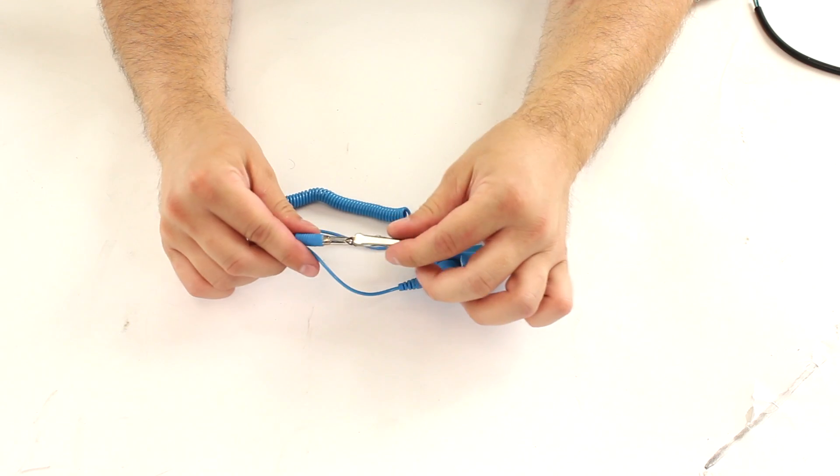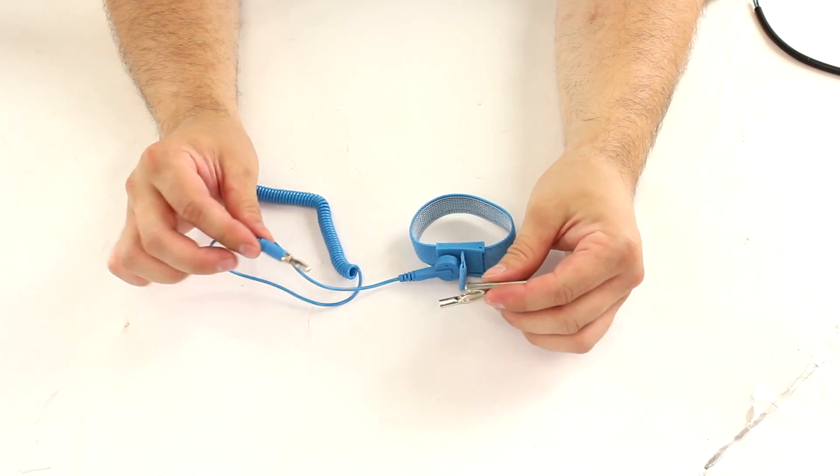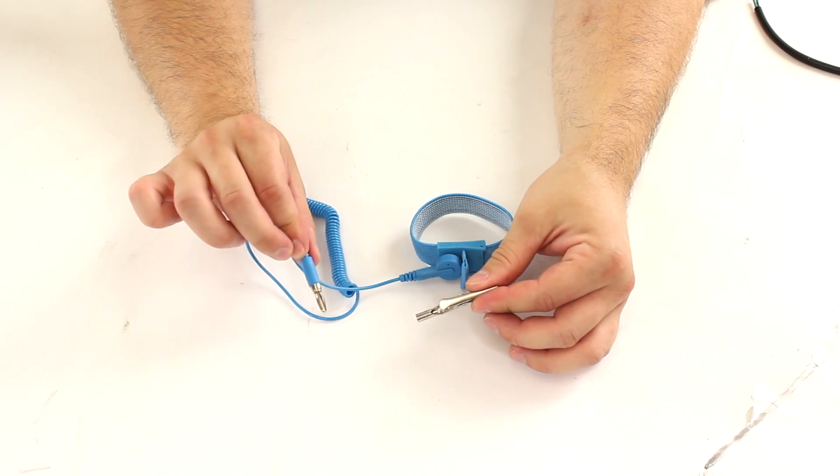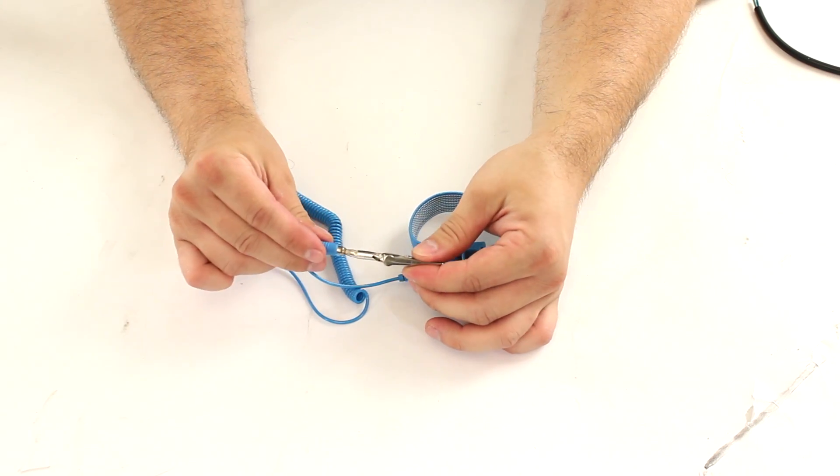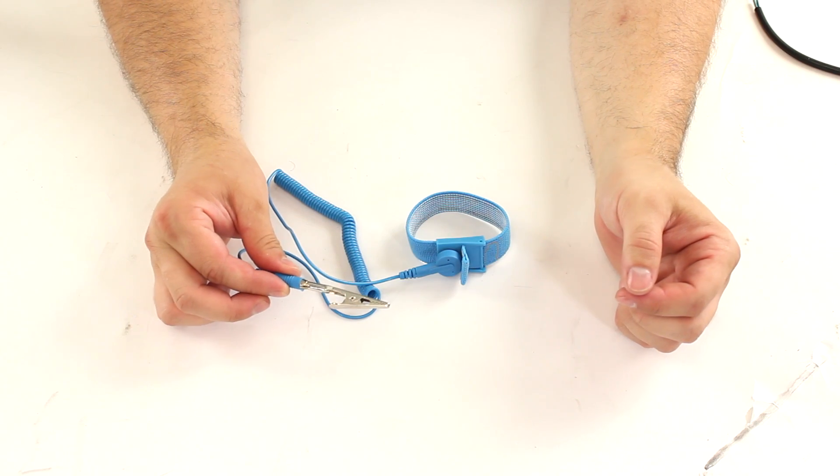These alligator clips are also removable, so if you wanted to hook it up to something else, for example, if you had a ground station at your bench and you wanted to plug right in, you can do that. Otherwise, you can use the alligator clip to plug onto the chassis, or whatever you are working on, or to a ground line.